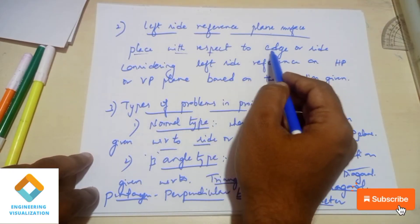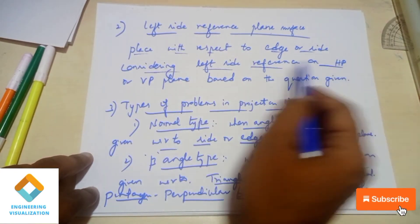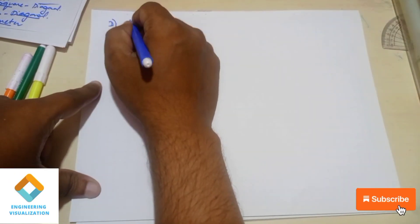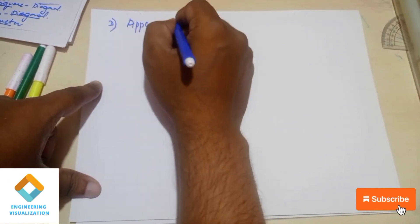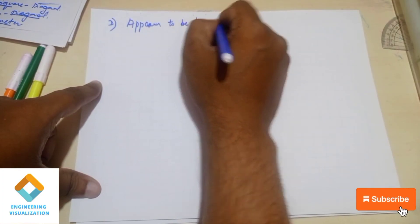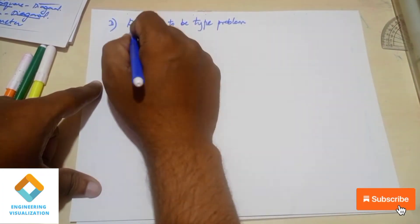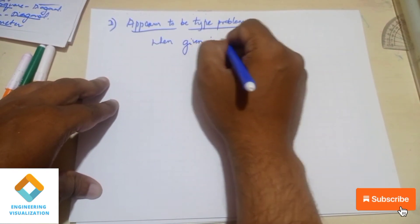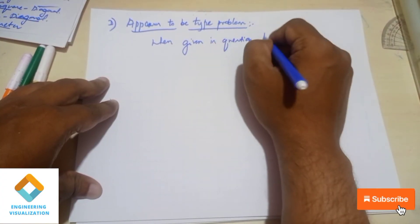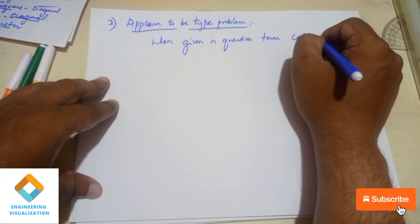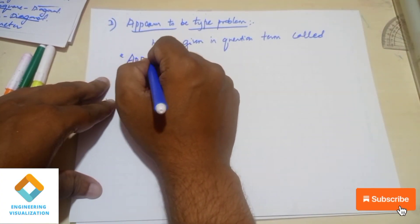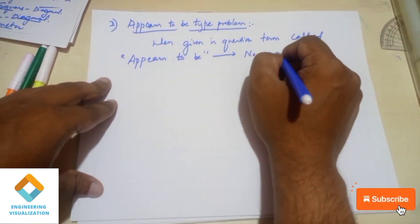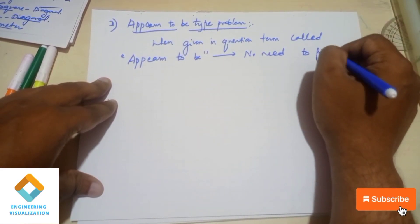Very important: left-hand side reference with respect to edge or with respect to corner on the particular plane - we have to be very careful. The next type of problem appears to be the beta angle problem, but it has one extra word: 'appears to be.' For example: perpendicular bisector appears to be inclined to VP; median appears to be inclined to VP; diagonal appears to be inclined to VP. So that extra word 'appears to be' makes it a different problem type.